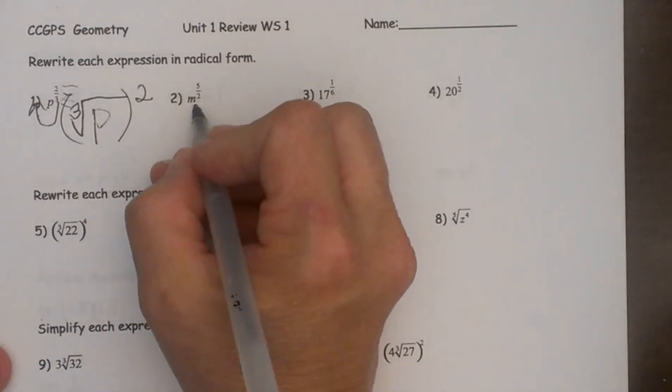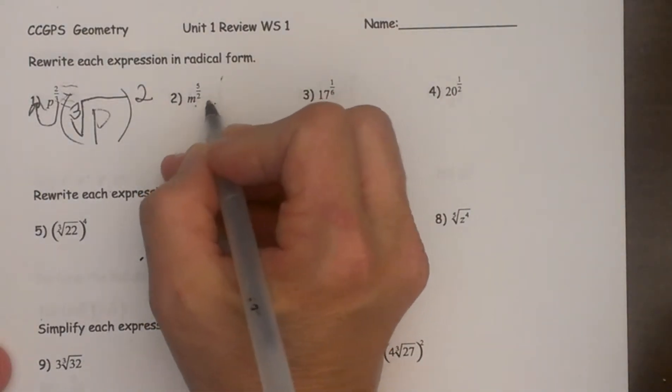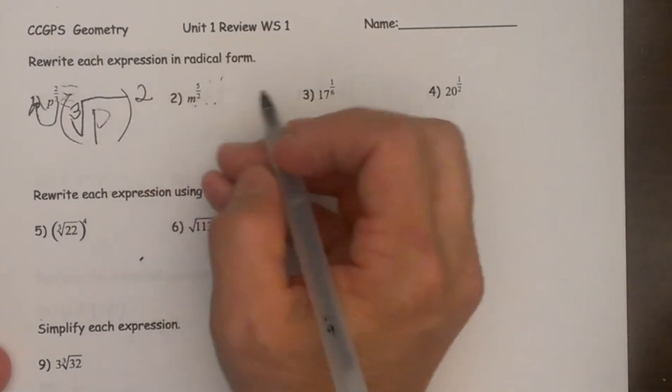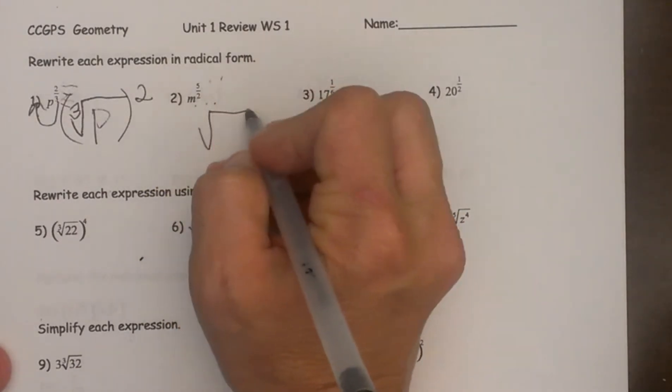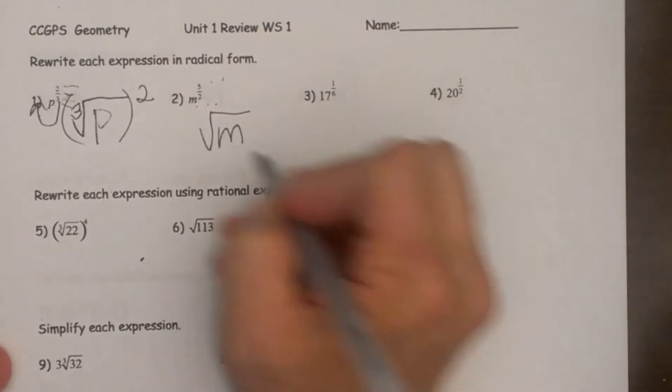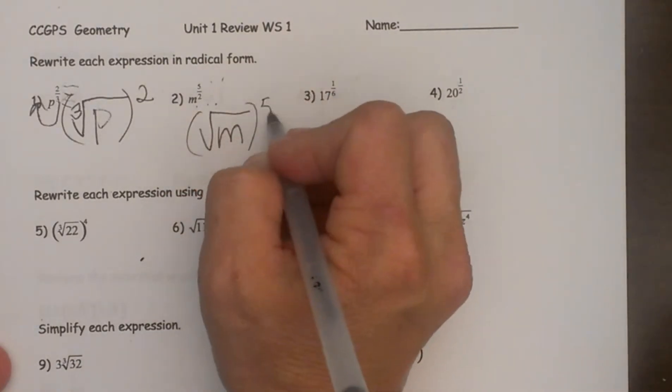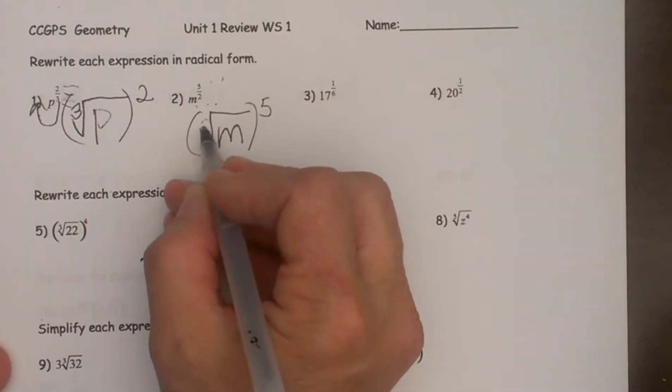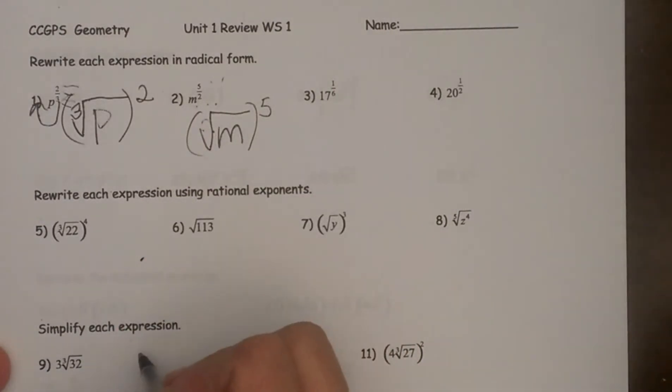So over here I have m to the two fifths. So the two is my root and the five is my exponent. So that is the square root of m raised to the fifth power. Now we don't write the two here. We know it exists and we know it is there.